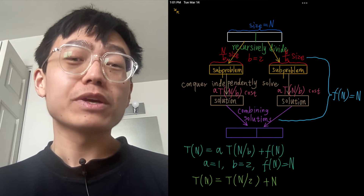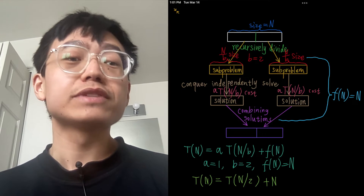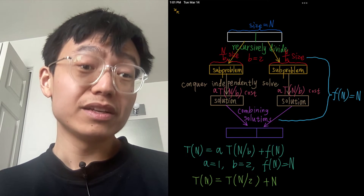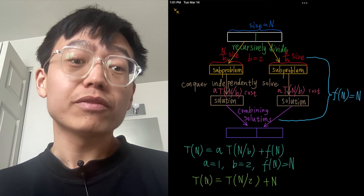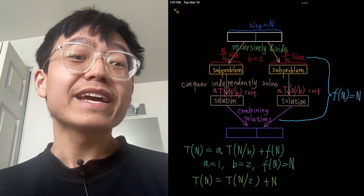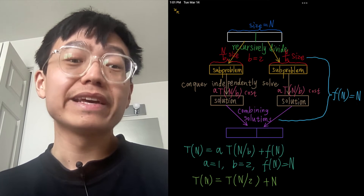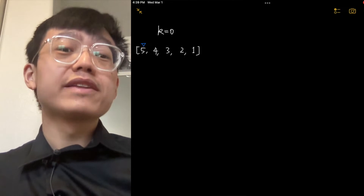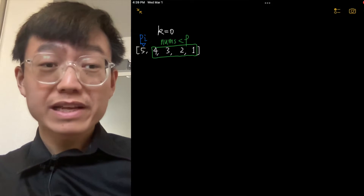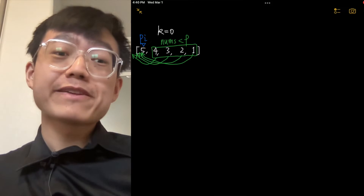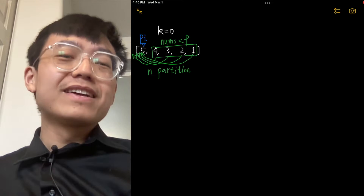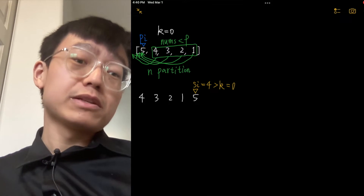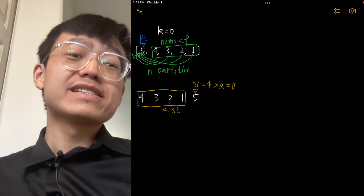However, in the worst-case scenario where the pivot element is chosen poorly, this algorithm can degrade to O(N²) time complexity. The worst case occurs when the problem is not divided in half at each step but becomes only one element smaller — for example, always choosing the rightmost element as the pivot. For random pivot choice, the probability of encountering this worst case is negligibly small.